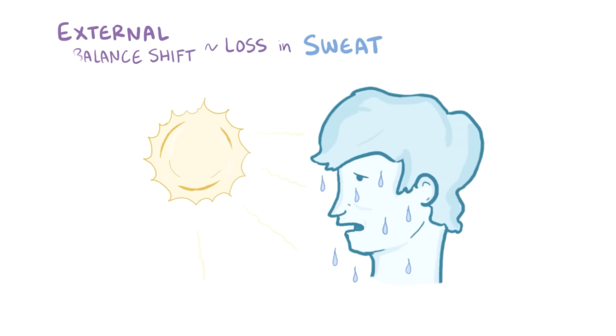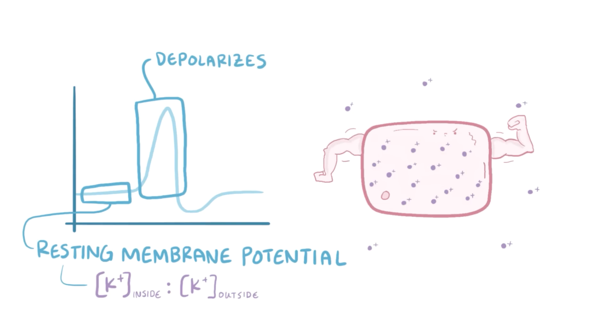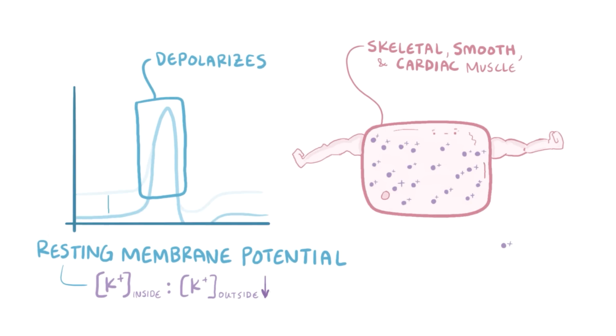Alright, so there are all these ways to develop hypokalemia, but what happens when somebody actually has hypokalemia? Well remember that the concentration of potassium inside and outside of cells is really super important for maintaining the resting cell membrane potential, and ultimately for allowing a cell to depolarize and a muscle to contract. And that includes all muscles, skeletal, smooth, and cardiac muscles. So with low potassium in the blood, the membrane potential can hyperpolarize, or become more negative. This means that the muscle cells become less reactive to stimuli.